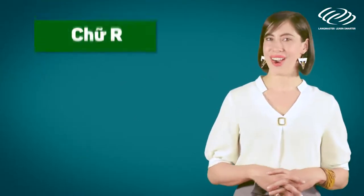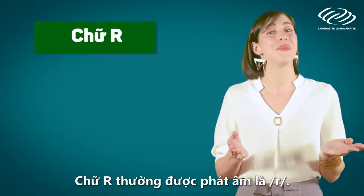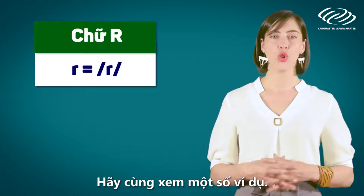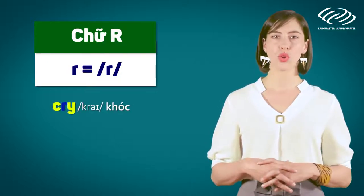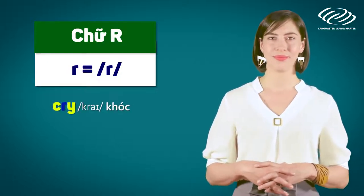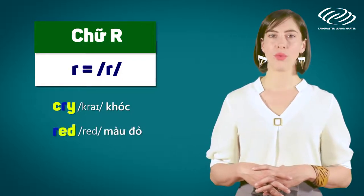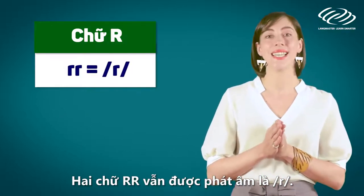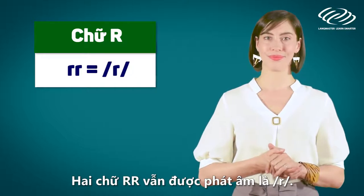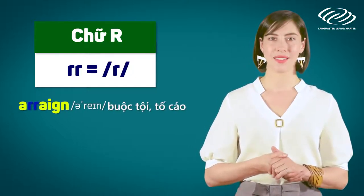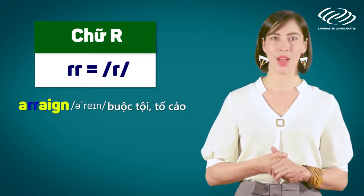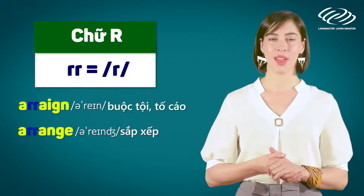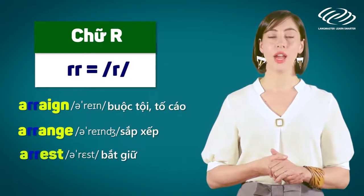The letter R. The letter R is often pronounced as /r/. For example: cry, red. The double R is also pronounced as /r/, for example: arrange, arrest.